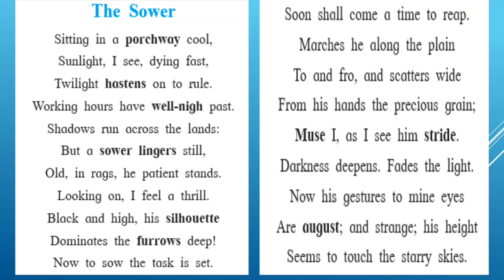'Now to sow, the task is set' — the farmer might have cultivated the land and done the anchoring, so now he is ready to set his sowing task. 'Soon shall come a time to reap. Marches he along the plain, to and fro, and scatters wide from his hands the precious grain.' Now the farmer has prepared the farm and prepared the land, so he goes on sowing the seeds into the very farm. 'To and fro' is a phrase — the farmer was sometimes moving ahead and sometimes moving back as he worked into the farm.